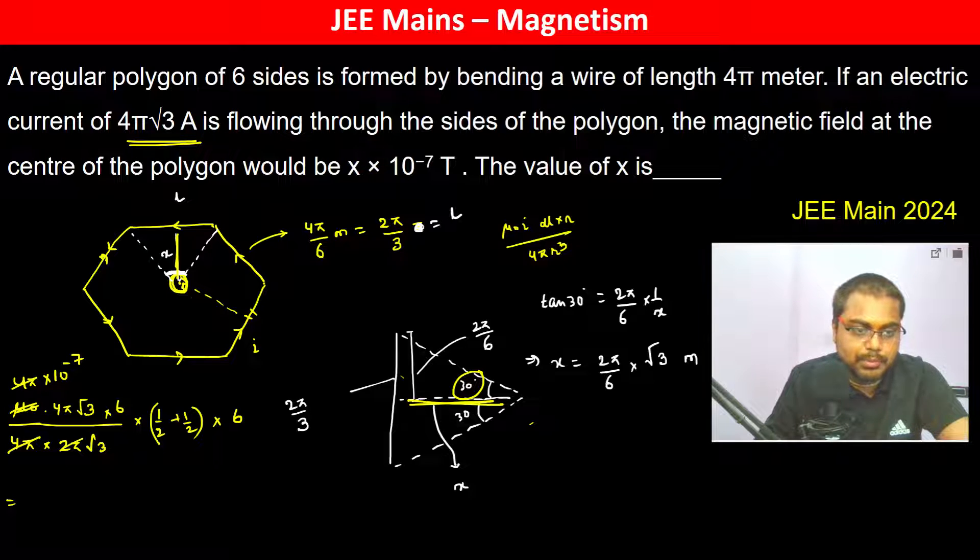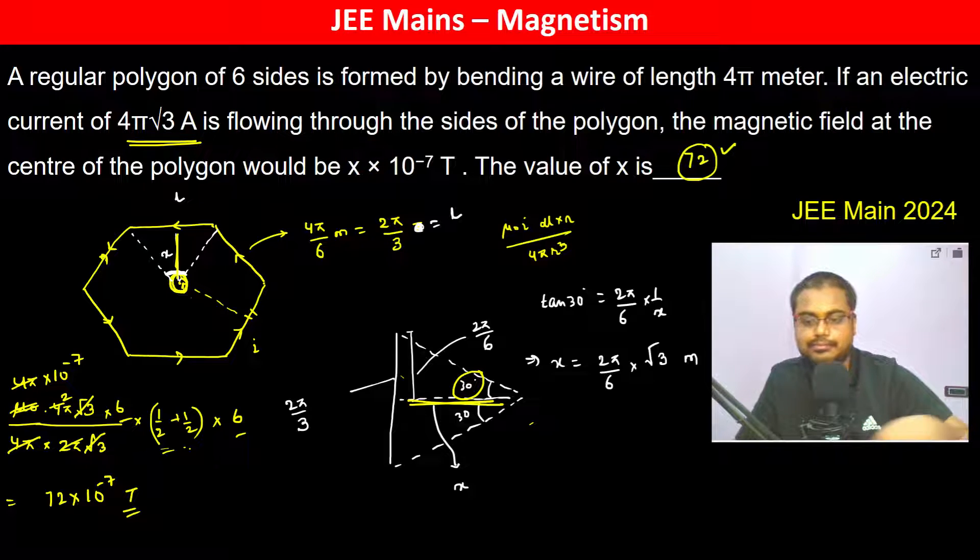4π cancels with 4π, 2π divides by 2, √3 cancels √3, and the halves become 1. 6 × 6 = 36, 36 × 2 = 72. Therefore, 72 × 10⁻⁷ Tesla, so the value of x is 72.